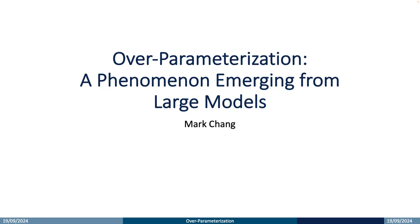In this video, we discuss the phenomenon of overparameterization. This phenomenon usually happens when a model has an extremely large number of parameters. In this case, the model does not usually overfit to the training data, but instead achieves higher performance than expected. This phenomenon contradicts the conventional theory of machine learning, and hence it is very important to understand what overparameterization is.